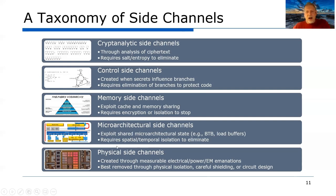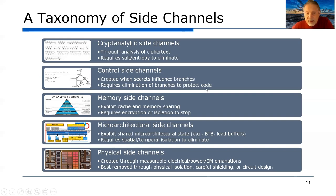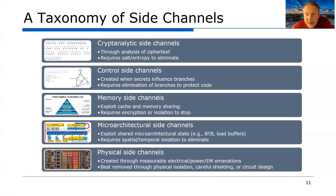Microarchitectural state side channels occur when the internal unarchitected state of the microarchitecture — branch target buffers, load buffers, etc. — holds information and affects the timing of microarchitectural operations. A clever attacker can manipulate that state to leak information out of the system or infer what a program is doing, either through competition or by looking at latency. And physical side channels are a circuit-level phenomenon where we look at electrical power, voltage variations, and electromagnetic emanations to infer the computation at the circuit level — a very powerful side channel that's difficult to stop.